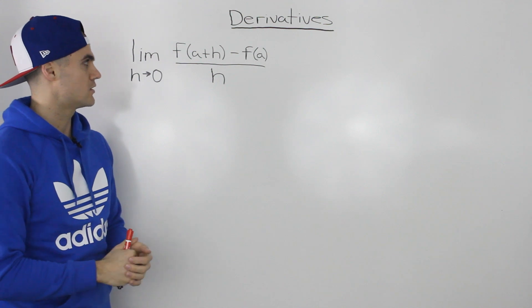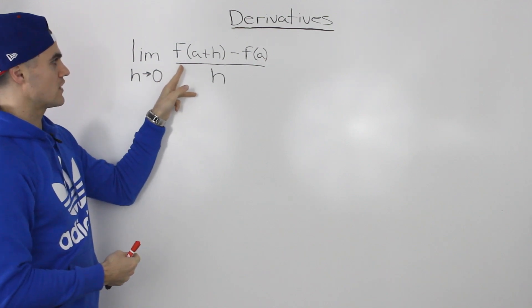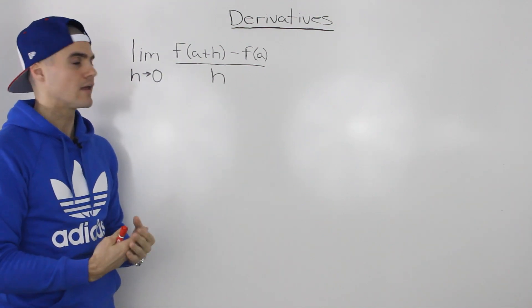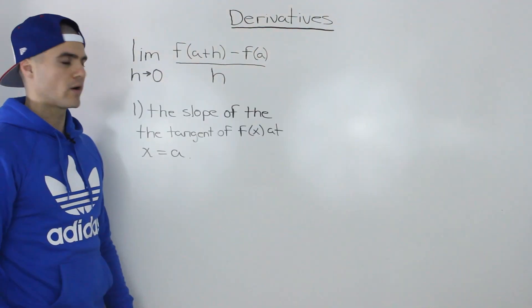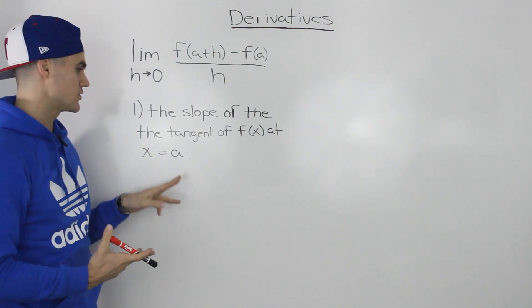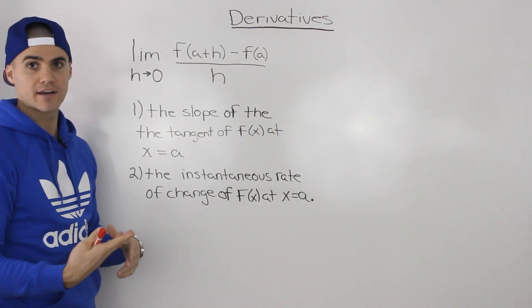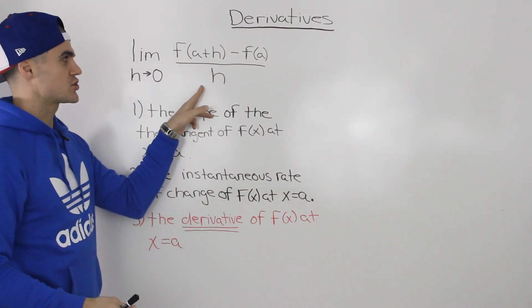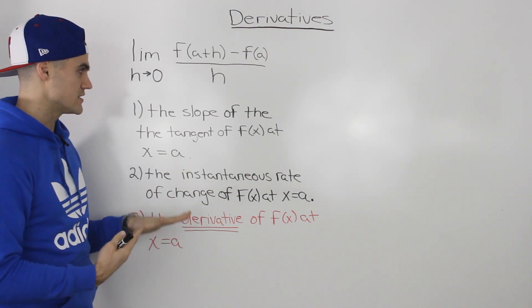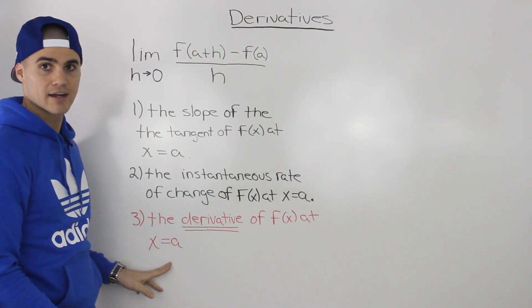To begin the explanation, let's do a little bit of review. In the previous chapter, we kept running into this expression over and over again: the limit as h goes to zero of f of a plus h minus f of a, all over h. We had a couple of interpretations for this expression. One interpretation was it's the slope of the tangent of f of x at an x value of a. Another interpretation was the instantaneous rate of change of the function f of x at an x value of a. Because this expression kept coming up, they decided to give it a name: the derivative of f of x at an x value of a.